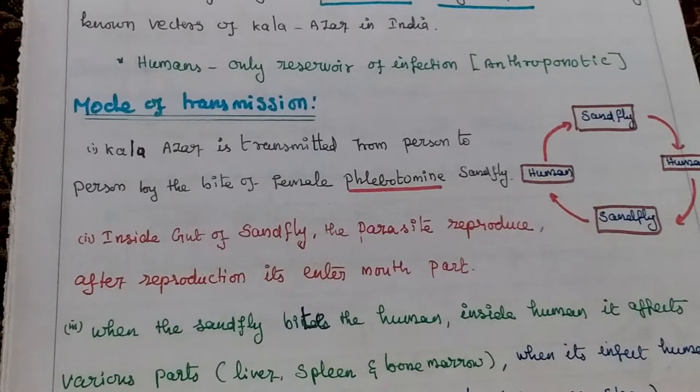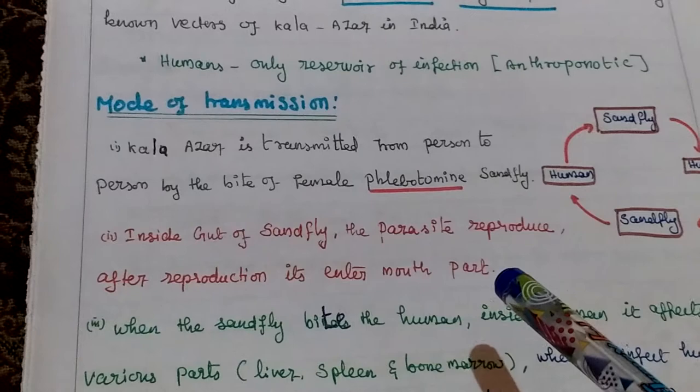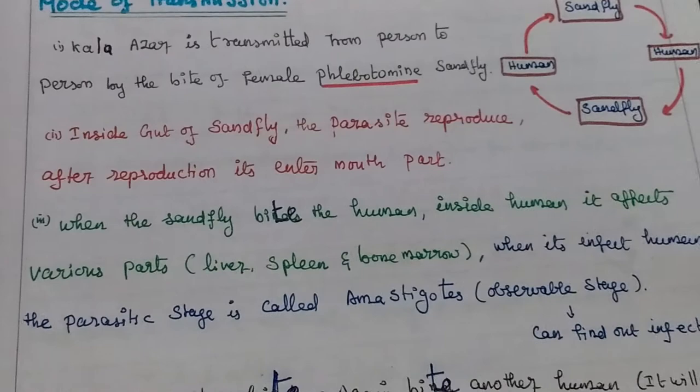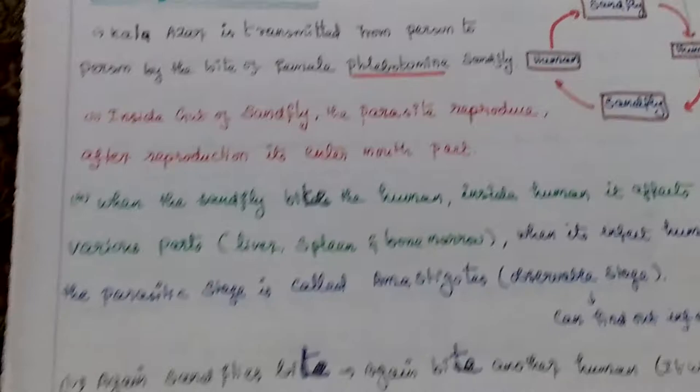The parasite inside the gut of the sandfly reproduces. After reproduction, it enters the mouth part of the sandfly. When the sandfly bites a human, inside the human it will affect various parts: liver, spleen, and bone marrow. The parasite then develops into the third stage called the amastigote form.